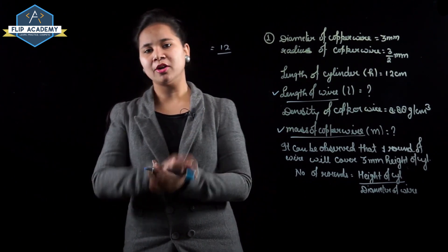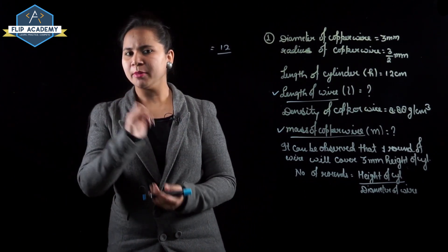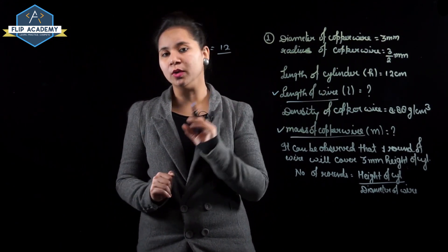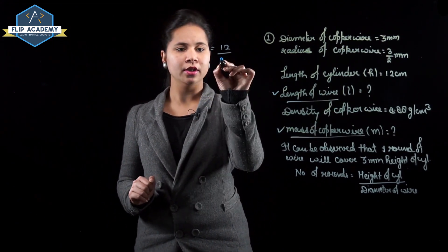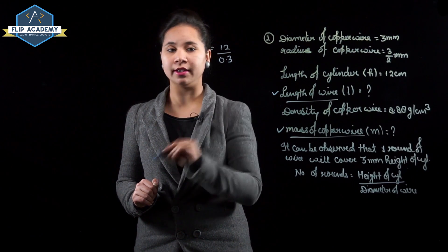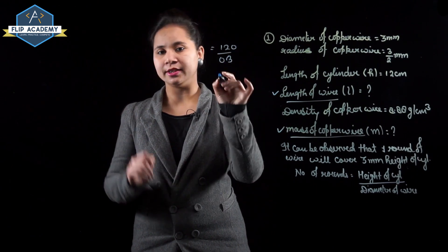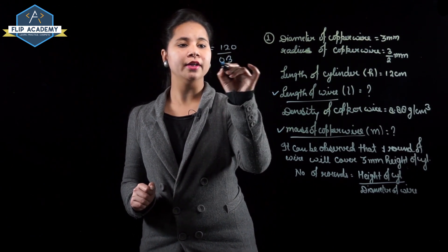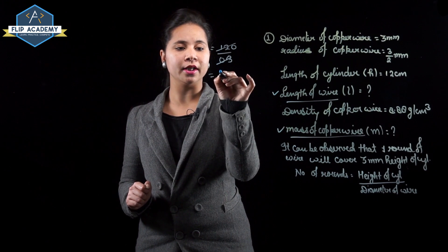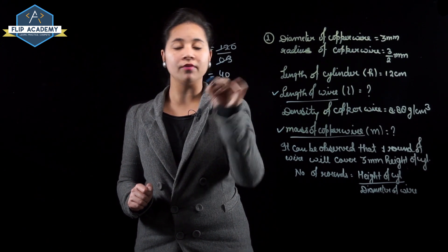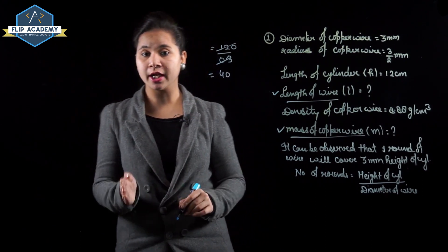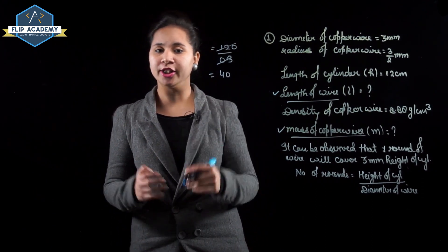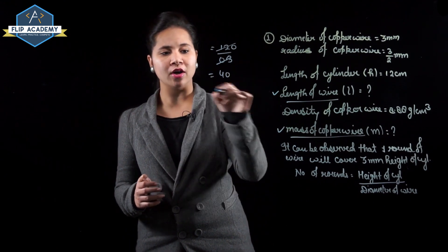Dividing by the diameter of wire which is 3 mm, converting to cm gives 0.3 cm. So 12 divided by 0.3 equals 40. Therefore, the number of rounds along the cylinder is 40.